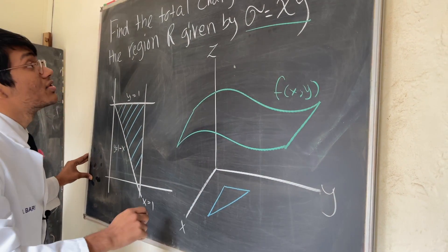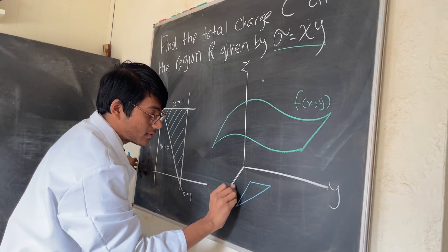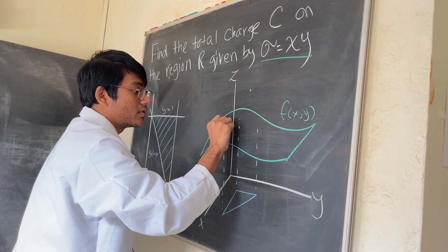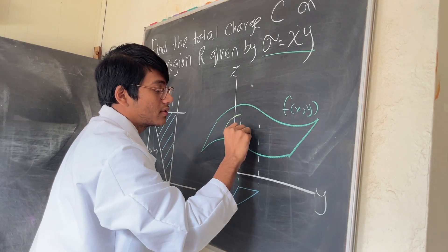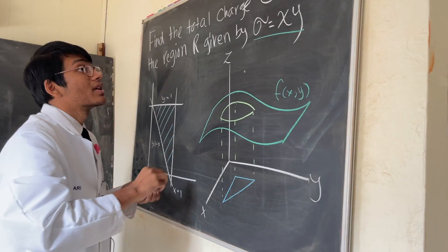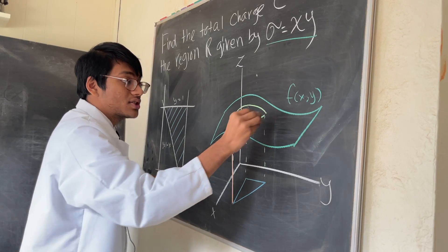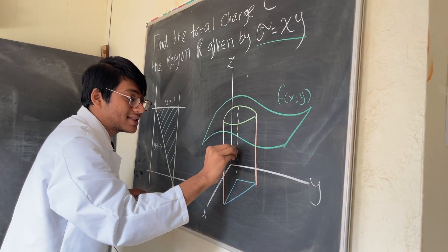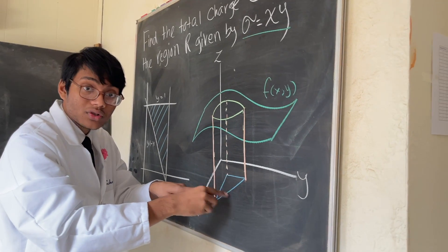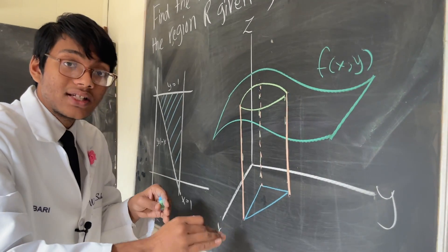What we're going to do with this triangular region is extrude it upwards, parallel to the z-axis, and get some kind of curve on our surface. We're trying to find the volume under this curve, and that volume is going to be the total amount of charge on this surface. So the key idea is: we integrate the density function over the region to find the total charge.